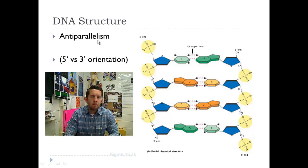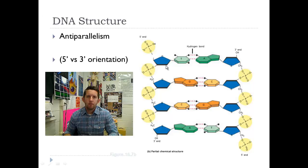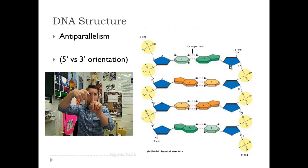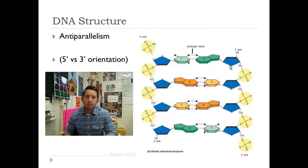DNA has an anti-parallel structure. If we look specifically at the 5-carbon sugar pentagon shape, the point is facing upward on one strand — running in a northerly direction. On the complementary strand, it's the opposite: the points are facing in a southerly direction with the phosphate groups facing down. They're running opposites of one another — one running in this direction and one running in that direction. Anti-parallel.